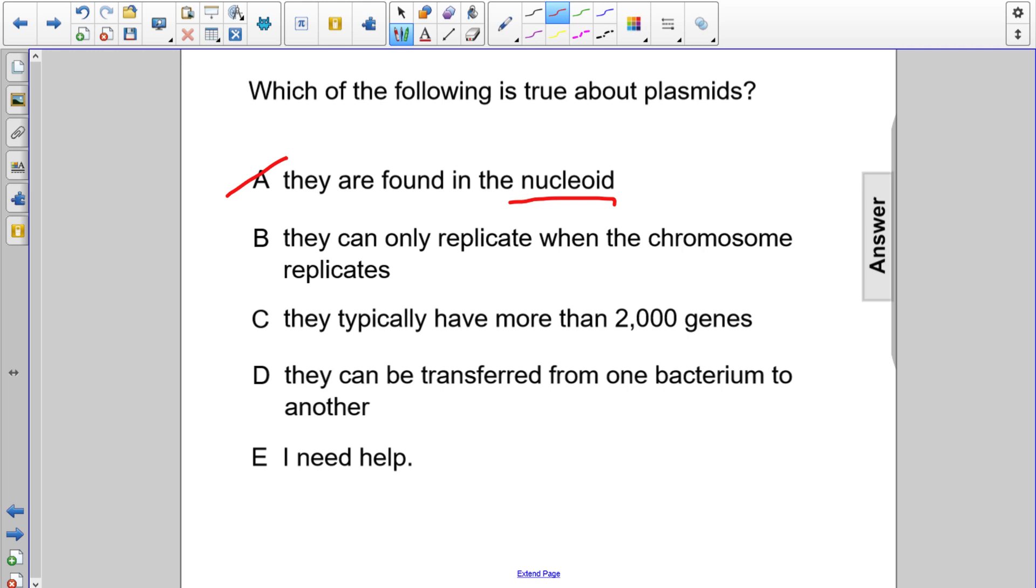Choice B says they can only replicate when the chromosome replicates. This is not true because plasmids are independent of the chromosome. So choice B is not the correct answer.